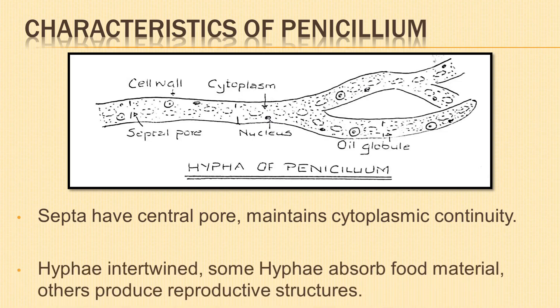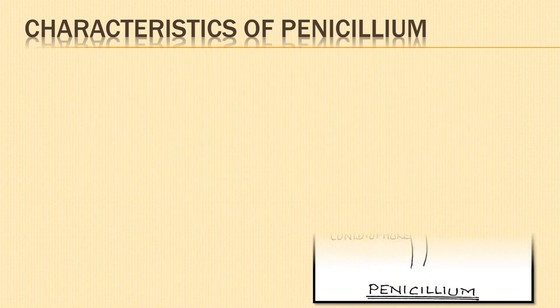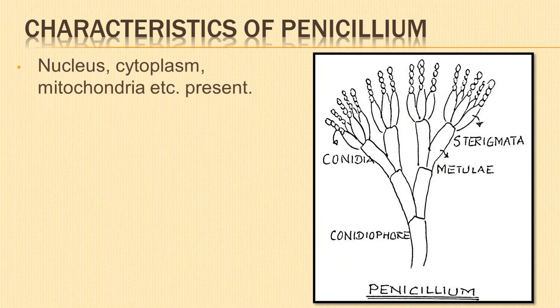The hyphae get intertwined with one another. Some hyphae grow deeper into the substratum to absorb food material. Other hyphae that rest on the surface produce reproductive structures. The cells of the hyphae contain nucleus, granular cytoplasm, and food particles. Embedded in the cytoplasm are present mitochondria, endoplasmic reticulum, ribosomes, etc.